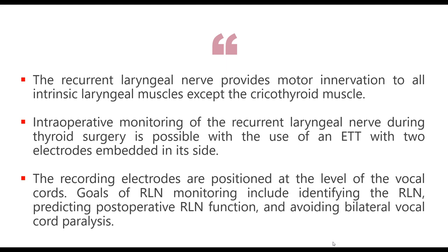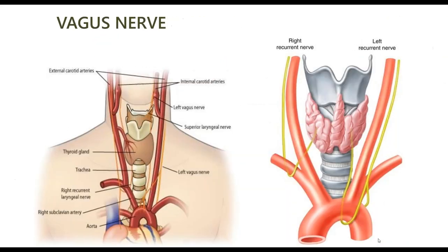The recording electrodes are positioned at the level of the vocal cords. The goals of RLN monitoring include identifying the RLN, predicting post-operative function, and avoiding bilateral vocal cord paralysis. The recurrent laryngeal nerve loops under the right subclavian artery on the right side and under the arch of the aorta on the left side, making the left RLN longer than the right and therefore at higher risk of stretch injury.